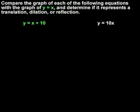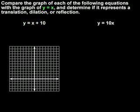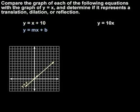To compare the graph of y equals x plus 10 with the graph of y equals x, let's start with the graph of y equals x, which is a diagonal line that passes through the origin. Next, to graph y equals x plus 10, we use the formula y equals mx plus b, where m represents the slope of the line and b represents the y-intercept.